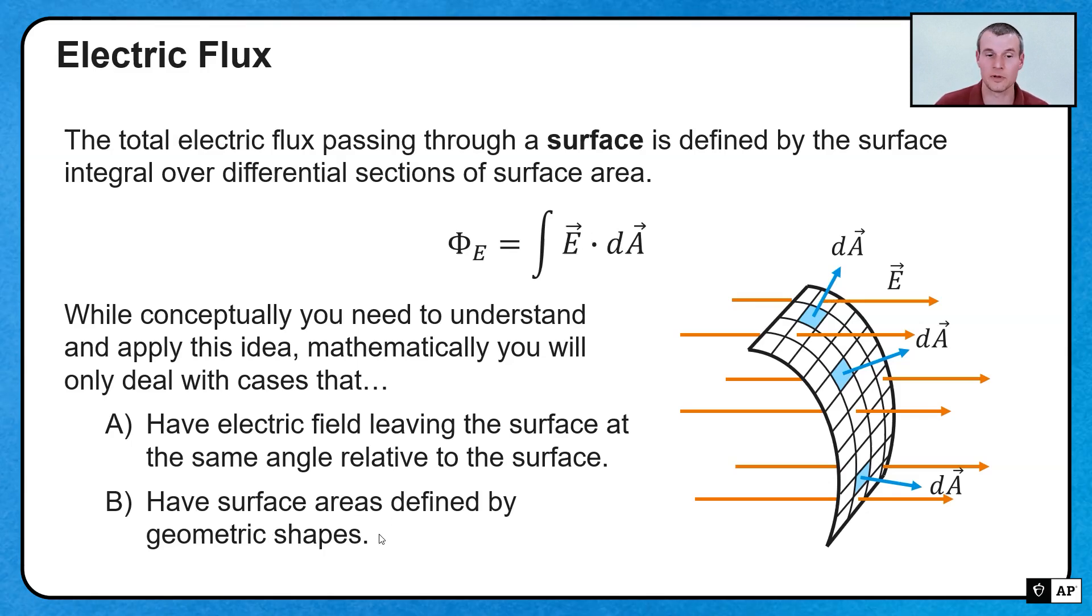Or, our surface area is defined by geometric shapes that do have changing angles, but you can very easily find what those shapes are going to be, whether it's a triangle or a cube or whatever that case might be.